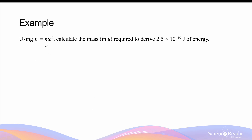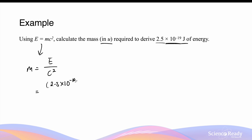The mass-energy equivalence equation can also be used to calculate the mass required to derive a certain amount of energy. For example, calculate the mass in atomic mass units required to derive 2.5 × 10¹⁹ joules of energy. We rearrange the equation to make mass the subject: mass equals energy divided by c squared. When given energy in joules, we can calculate the mass in kilograms. So it's 2.5 × 10⁻¹⁹ divided by (3 × 10⁸)², which yields a mass of approximately 2.8 × 10⁻³⁶ kilograms.